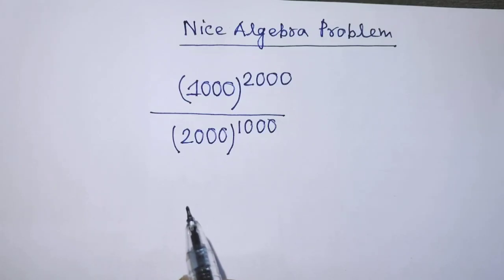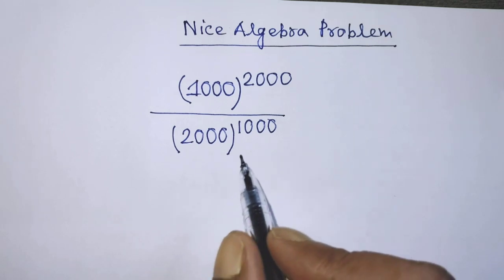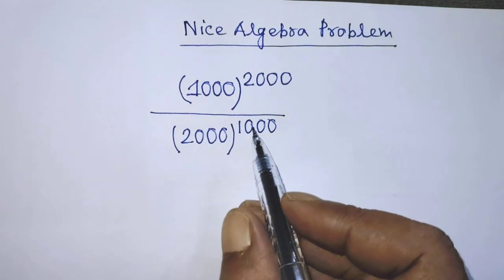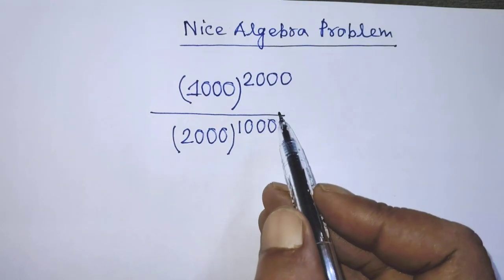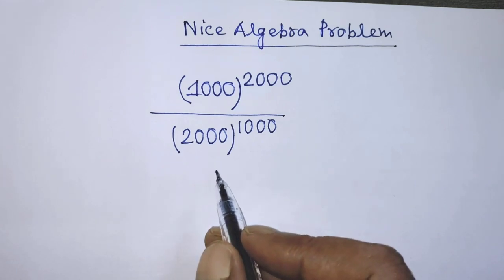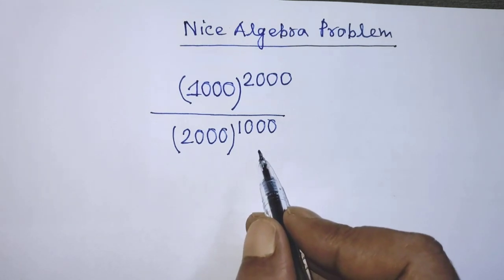Hello guys, you are welcome to solve this math problem, which is 1000 whole to the power 2000 over 2000 whole to the power 1000.